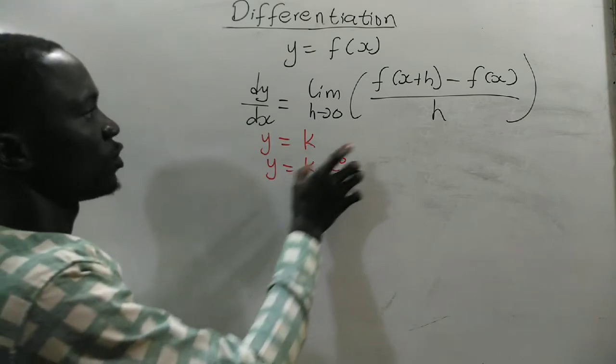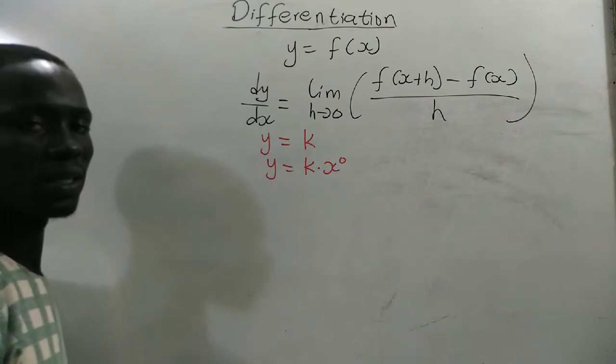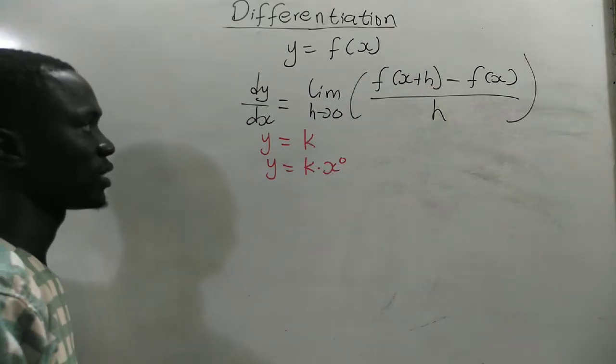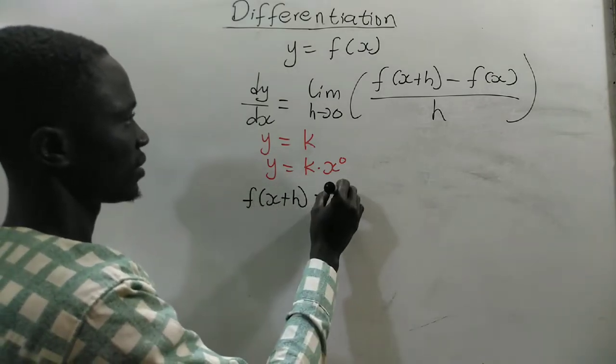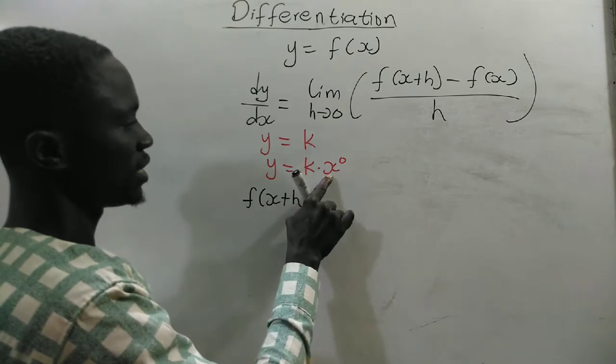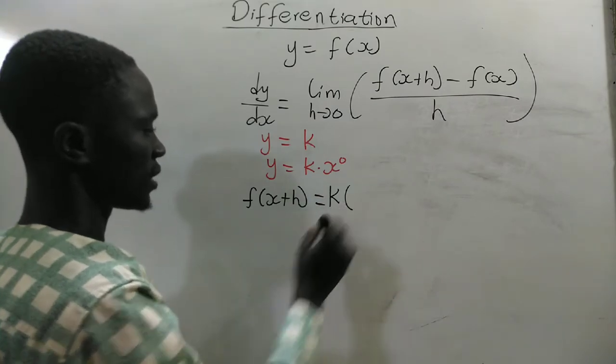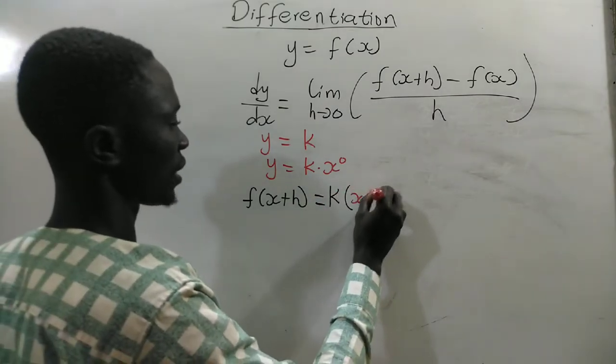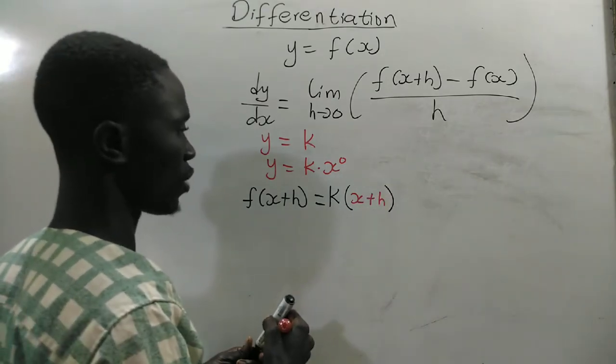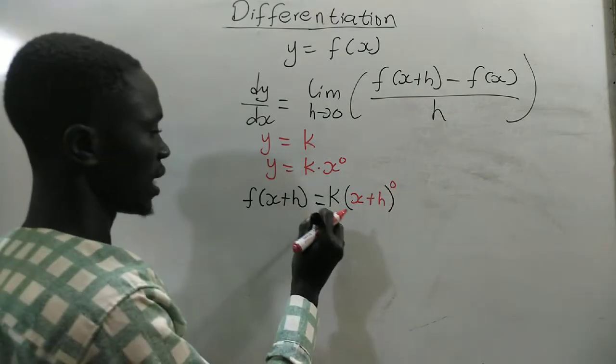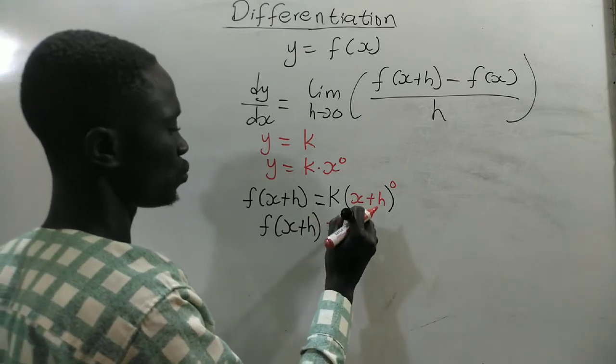So now, we have to find our f of x plus h, and then put it back into the expression that we have here. So, if we take f of x plus h, we are going to get, whenever we see x, we put x plus h. So, we are going to have k times x plus h to the power 0, and then we have f of x plus h is equal to k.